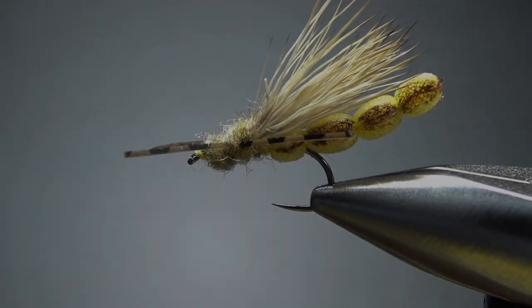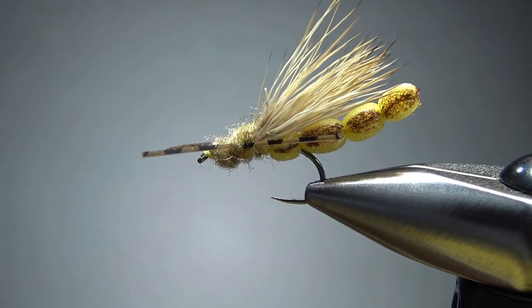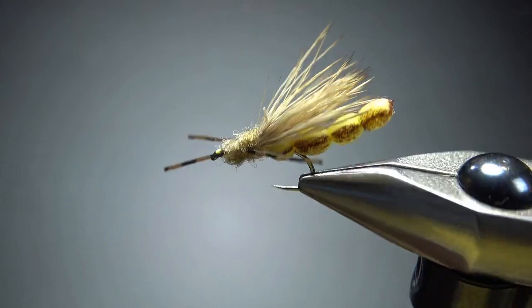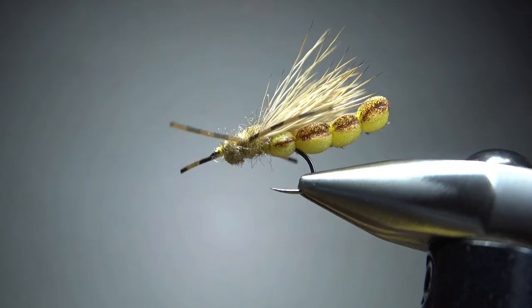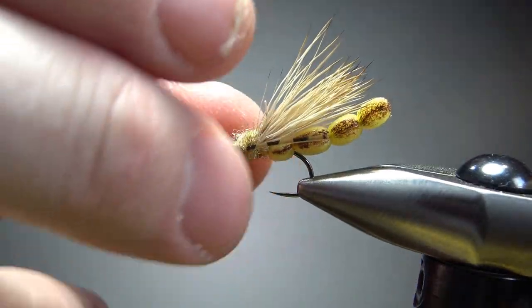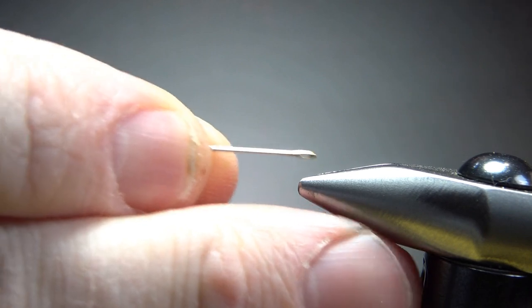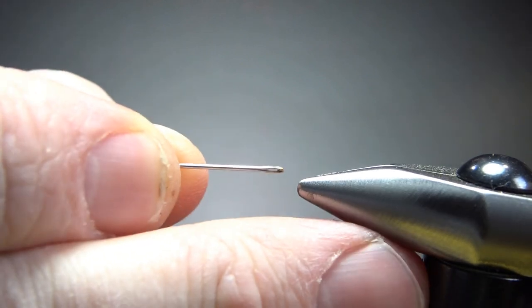So there's one in the vice, just a foam extended body stonefly. In this case, we're doing a yellow sally. So this is a size 12. If you're doing a big western stonefly, you might want to go bigger, you can go as big as a six or eight. First thing you want to do to tie in the extended body, just a regular sewing hook right here.